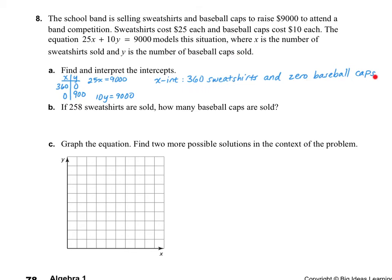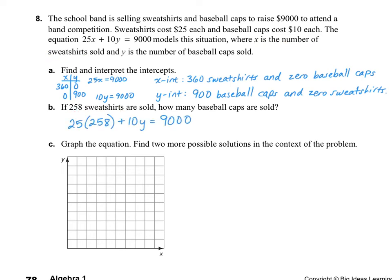The Y-intercept: when I plug in 0 for X, I get 10Y is equal to 9,000. Dividing by 10, Y is 900. So the Y-intercept represents 900 baseball caps and 0 sweatshirts. For part B, if 258 sweatshirts were sold, how many baseball caps were sold? We plug in 258 for X, which gives us 6,450 plus 10Y equals 9,000. Subtracting 6,450 from both sides leaves 10Y equals 2,550, and dividing by 10, Y equals 255. So 255 baseball caps were sold.